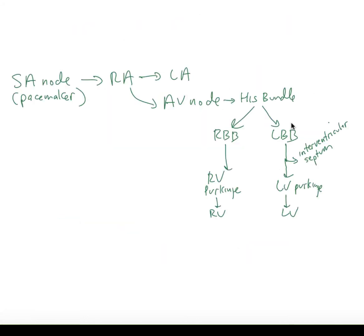Let's summarize this. We start with the SA node being the pacemaker in the right atrium. The depolarization goes to the right atrial muscle, over to the left atrium, and down to the atrioventricular node.